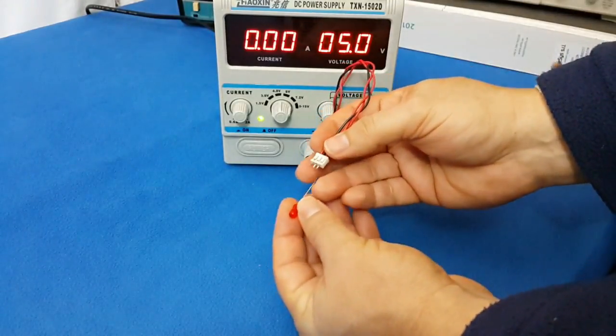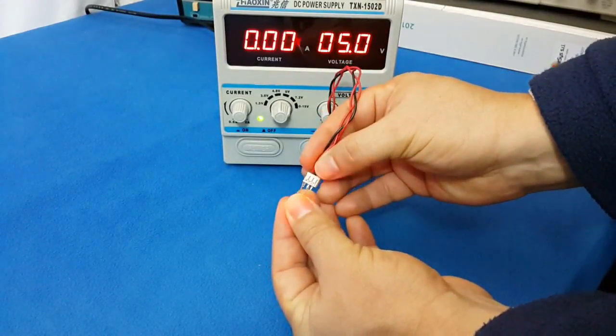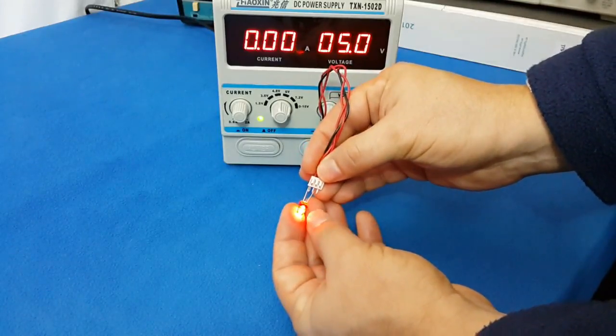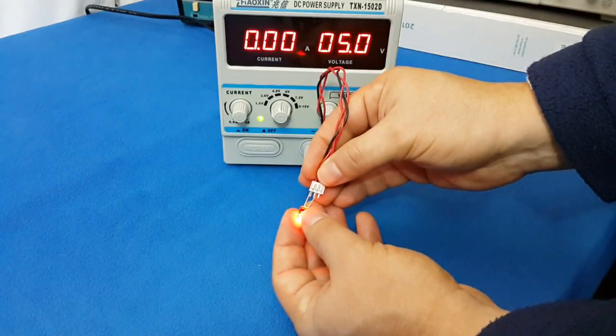You can also test a LED diode out of the circuit to check your inventory if it is good or bad.